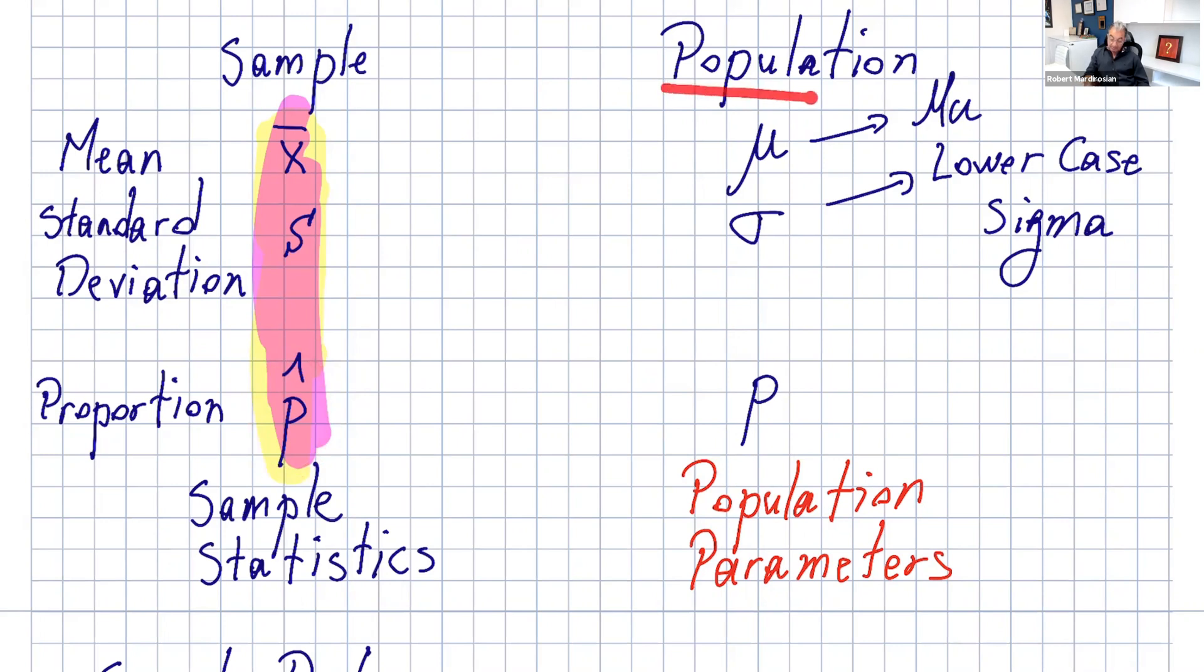Now coming to population, the population mean is mu. That's a Greek letter, you read it mu. The population standard deviation is lowercase sigma. Uppercase sigma is written like this for sum. And the population proportion is just P without the hat.